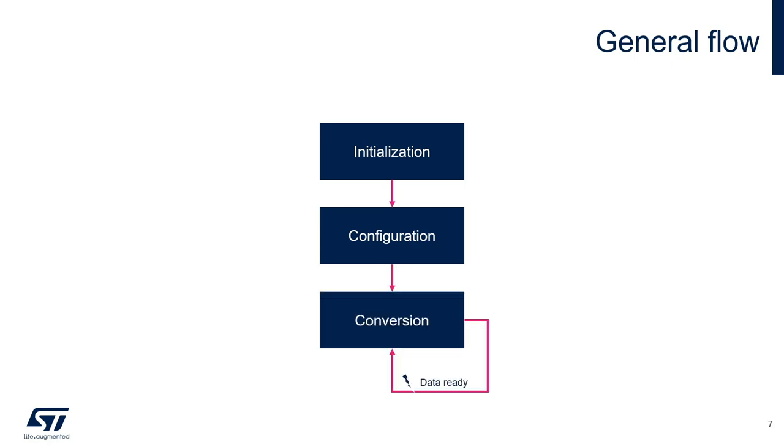Conversion is the actual call to the filtering and decimation function. Usually, it's triggered periodically by the data acquisition process. As soon as we have enough data to be processed, we call the processing function. Let's have a look at how those operations are done in the code.